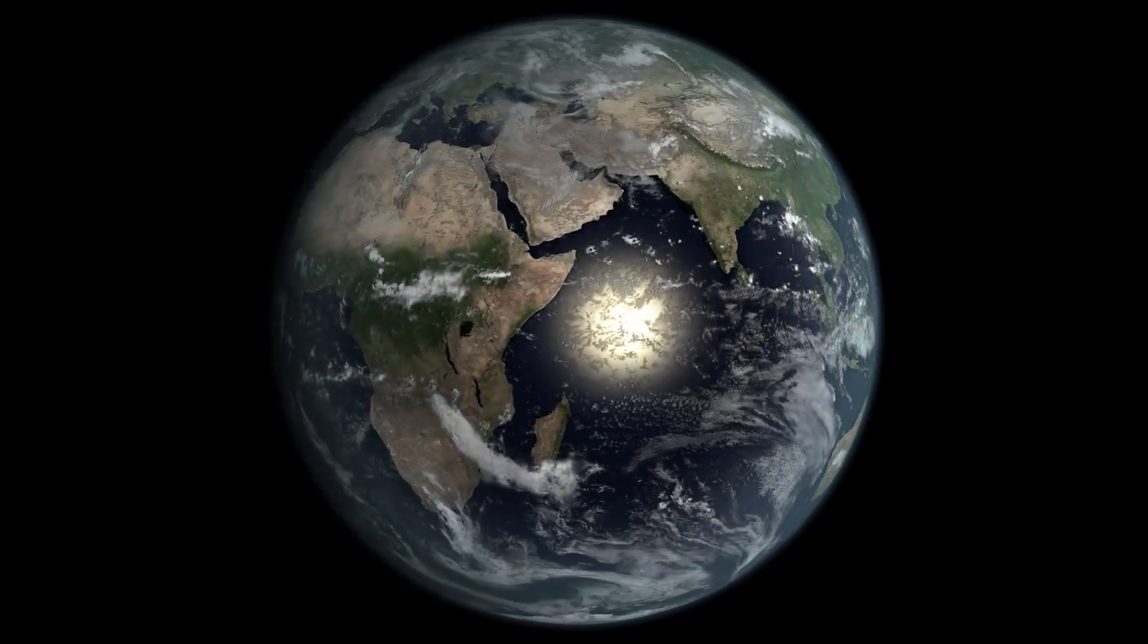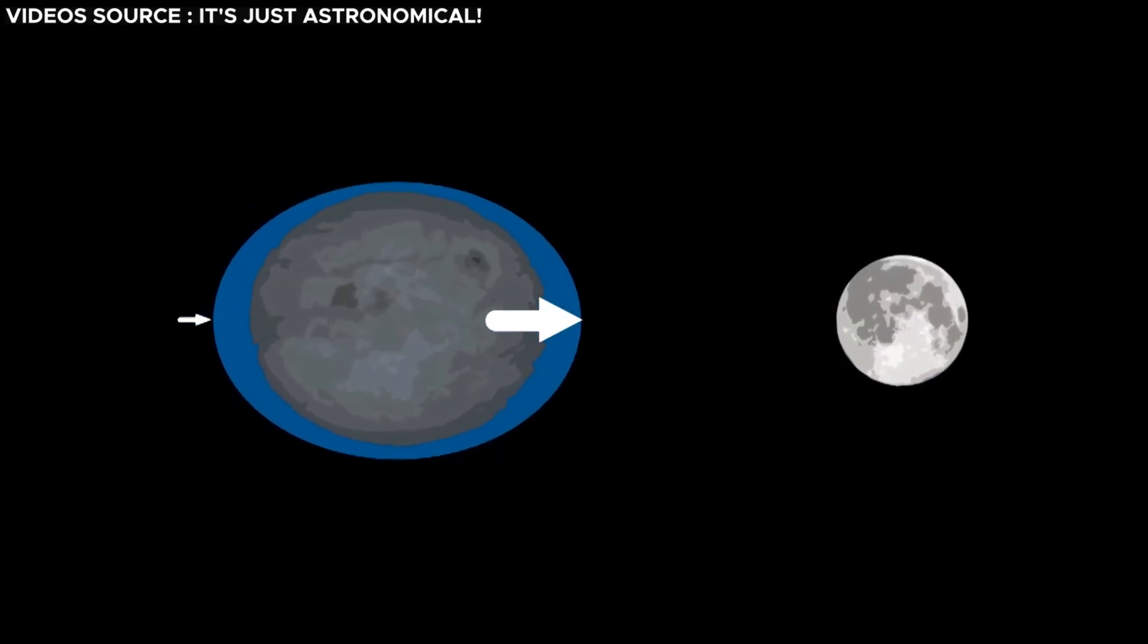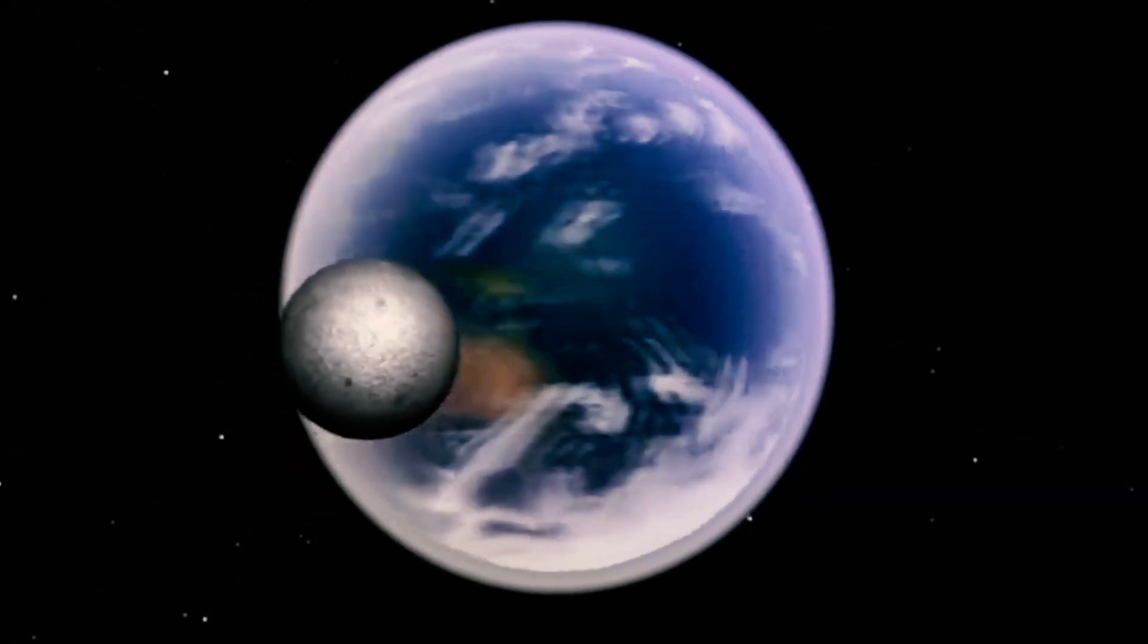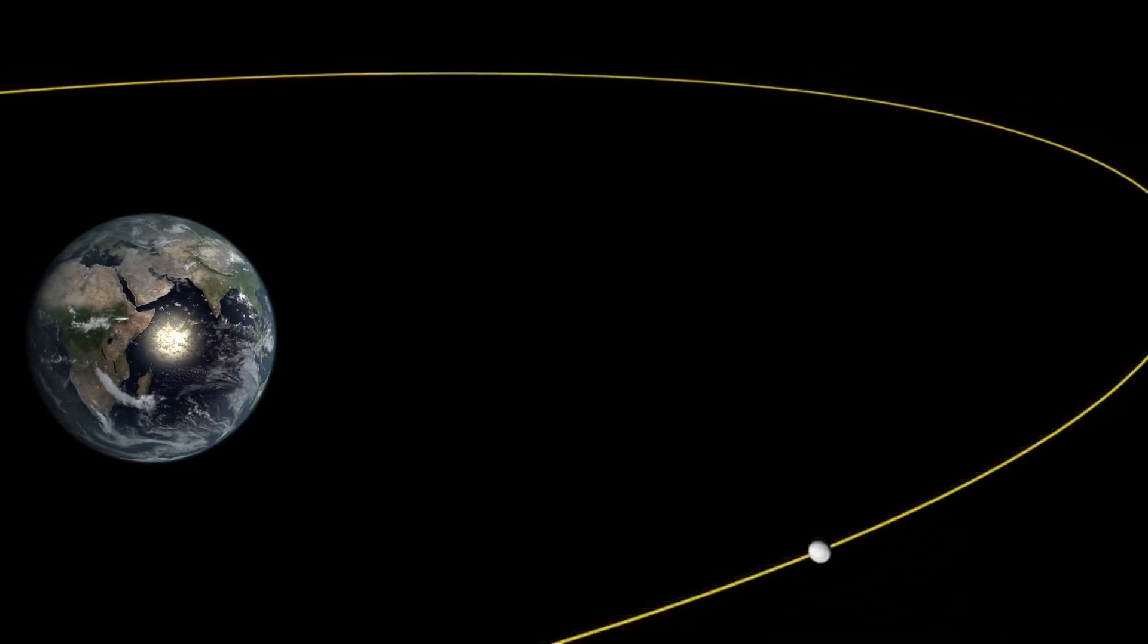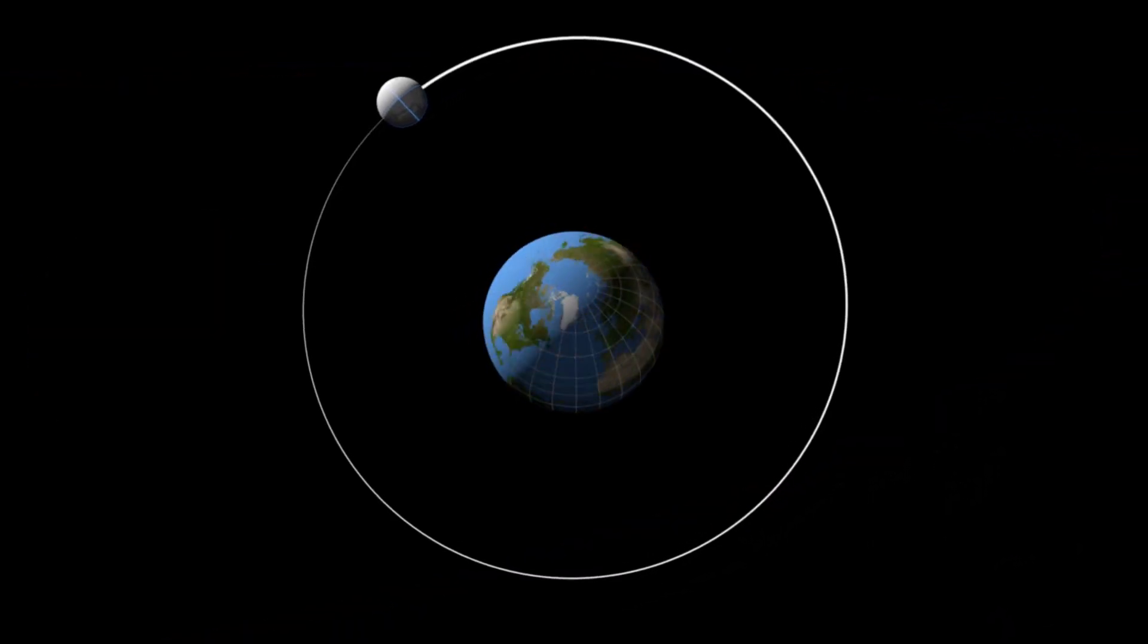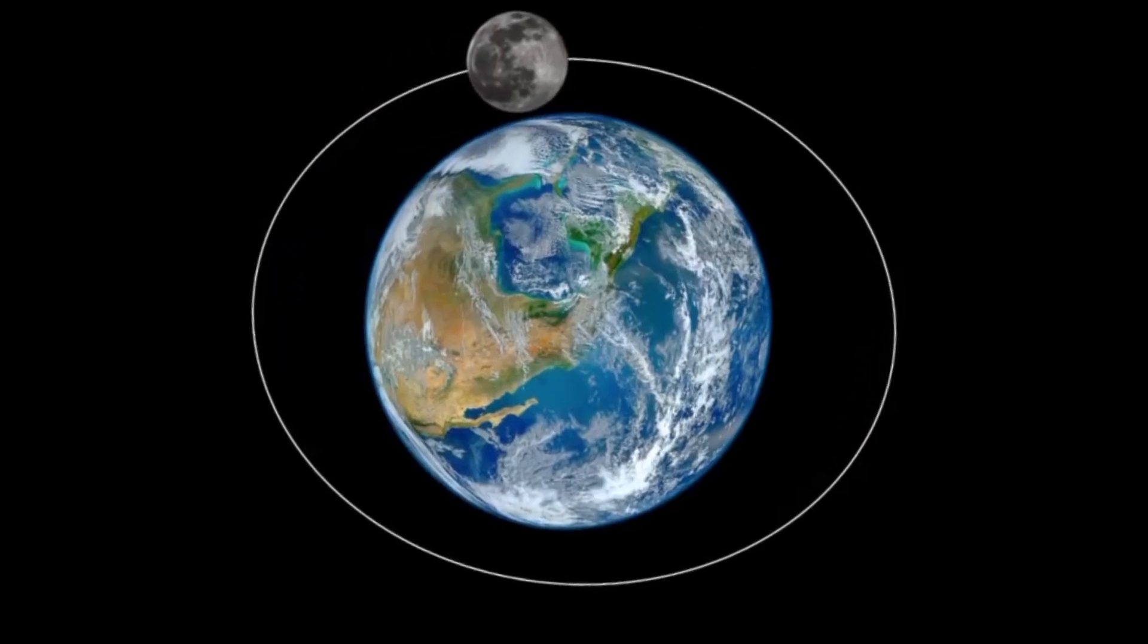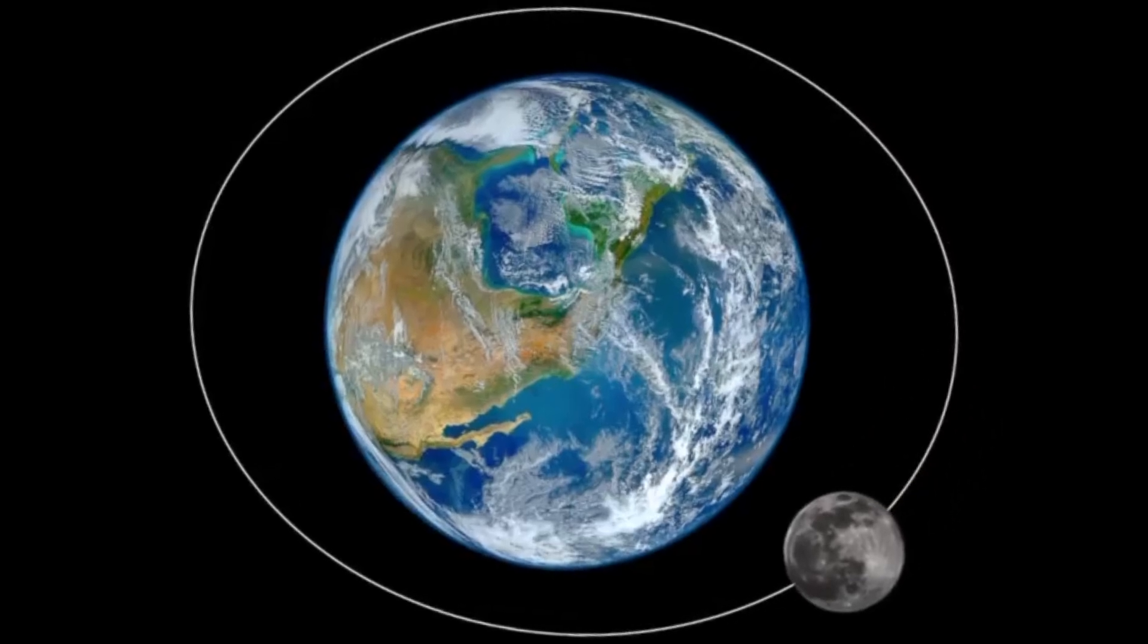This bulge stems from the Earth's rotation, leading to a slight outward protrusion at its equator. The gravitational influence from this bulge imparts a minor deceleration to the moon, prompting it to drift slightly farther from Earth. This cyclical pattern of the moon intermittently surpassing its projected position and subsequently being decelerated by Earth's gravitational pull repeats iteratively.